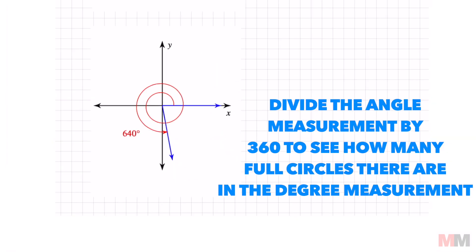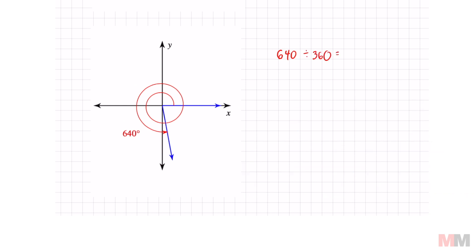So the first thing I'd like to do is take 640, and I divide it by 360. That's going to determine how many full circles I traveled within that degree measurement. 640 divided by 360 is one and some change. I mean, we don't really need to pay attention to that 0.7. I just need to look at that one.